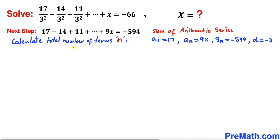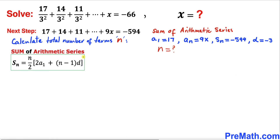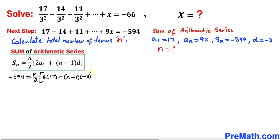Now we are going to calculate the total number of terms n in this series. Let's recall the sum of arithmetic series formula: Sₙ equals n divided by 2, times 2a₁ plus (n minus 1) times d. Filling in the blanks: Sₙ is negative 594, equals n divided by 2, times 2 times 17, plus (n minus 1) times negative 3.